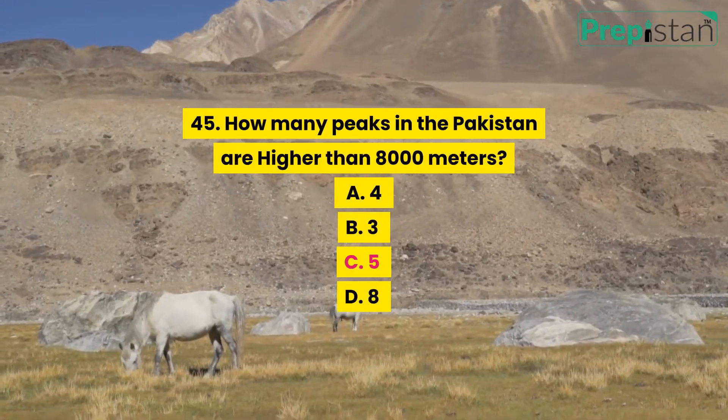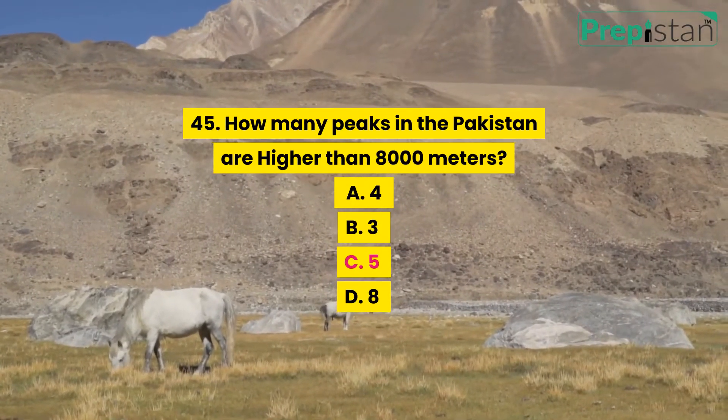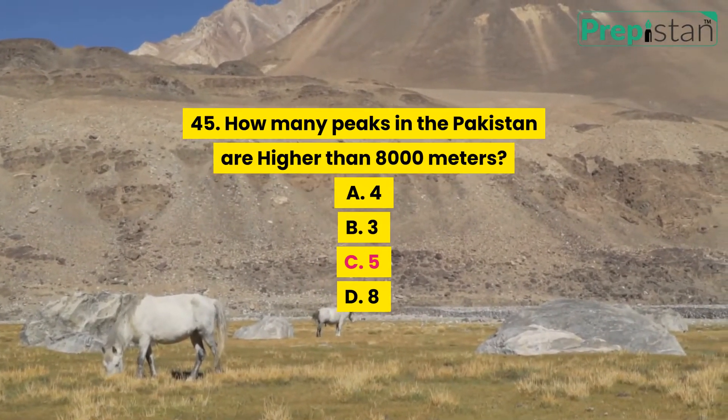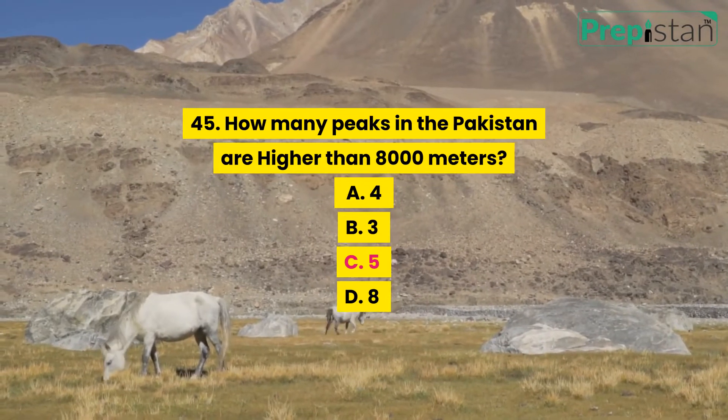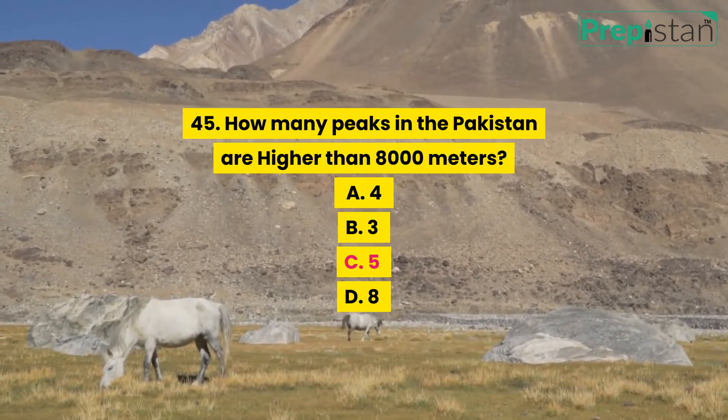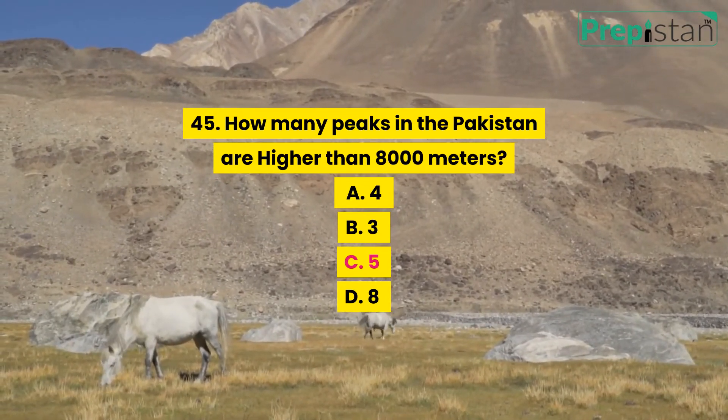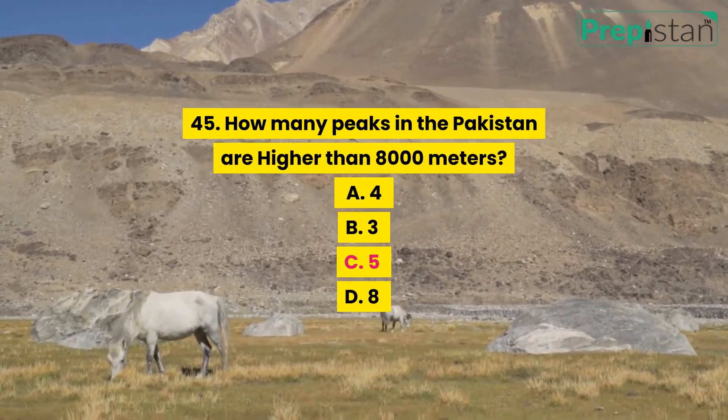Question 45: How many peaks in Pakistan are higher than 8,000 meters? A. 4, B. 3, C. 5, D. 8.